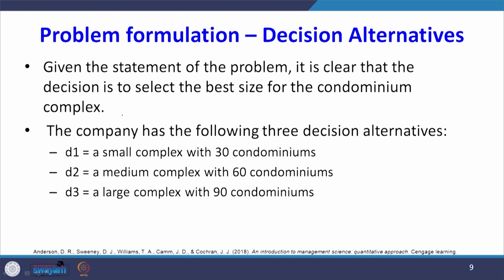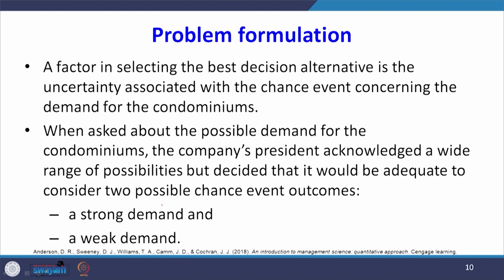First, we will decide what the decision alternatives are. Given the statement of the problem, the decision is to select the best size for the condominium complex. The company has three decision alternatives: D1 small, D2 medium, and D3 large complex. A factor in selecting the best decision alternative is the uncertainty associated with the chance event concerning the demand for the condominiums, so the states of nature here is demand.